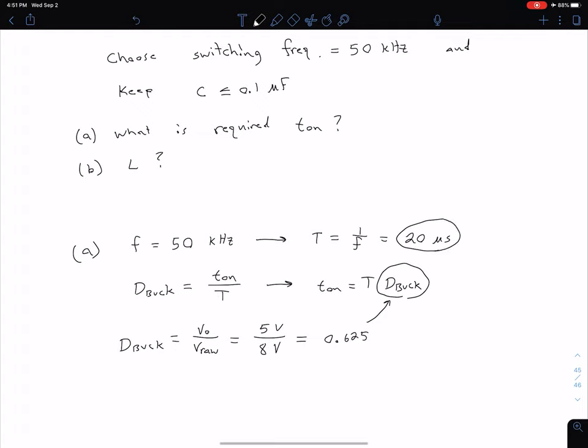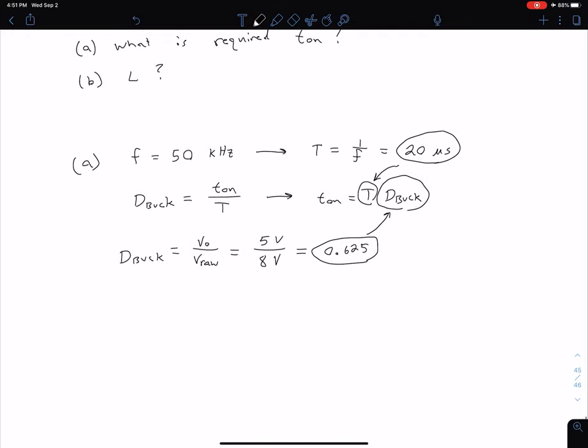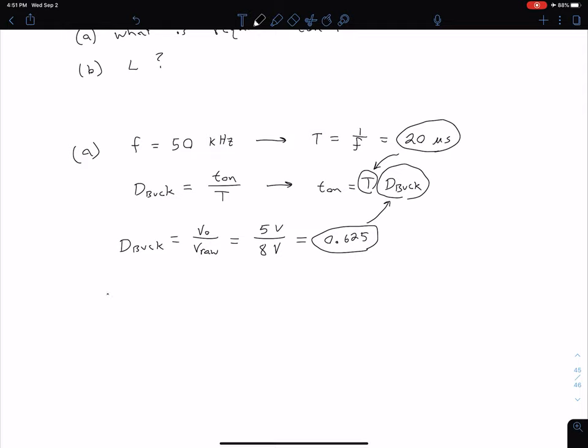And we plug in this 20 microseconds for our T. So once we make those substitutions, we can find our T_on. So we have T_on equals 20 microseconds times 0.625. So basically we can see 62.5% of the time will be on. That comes out to be 12.5 microseconds. So that would be our answer for part A. That means we're going to close the switch for 12.5 microseconds, and then we're going to open it for the remainder of the period, which is 7.5 microseconds in this case.